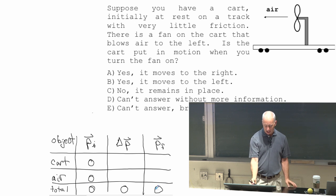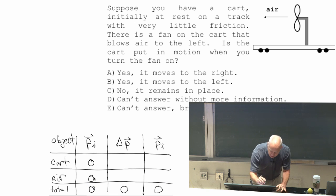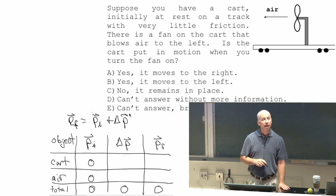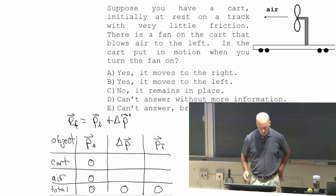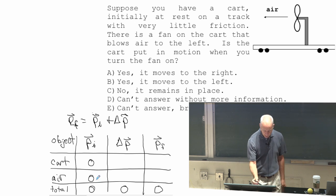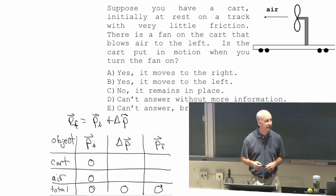You probably can figure out that p final equals p initial plus delta p. This is another way of writing the same equation for delta p. So if p initial's zero and you add delta p onto that, which is zero, you find p final is zero.